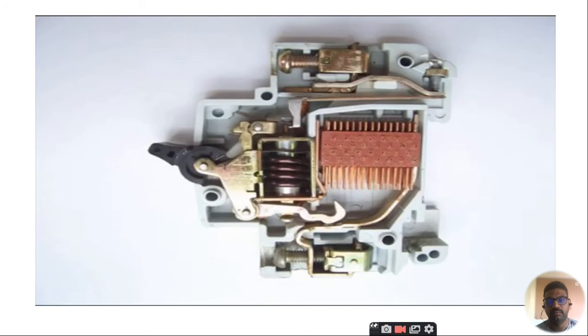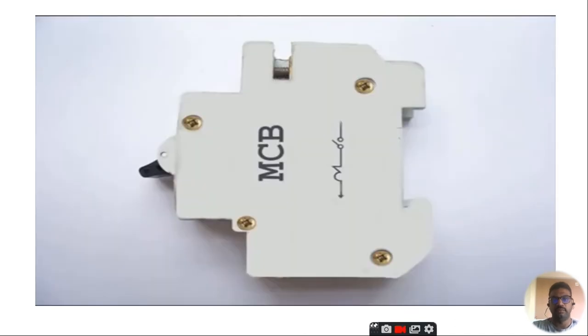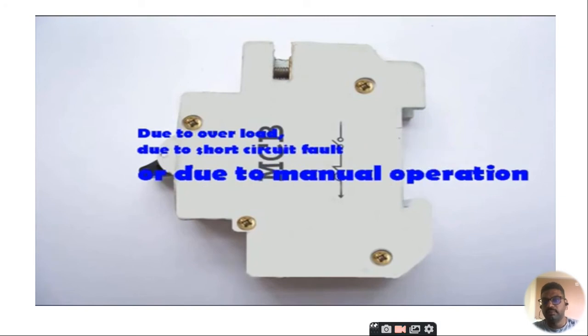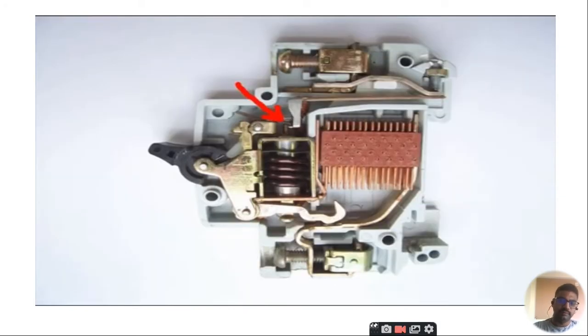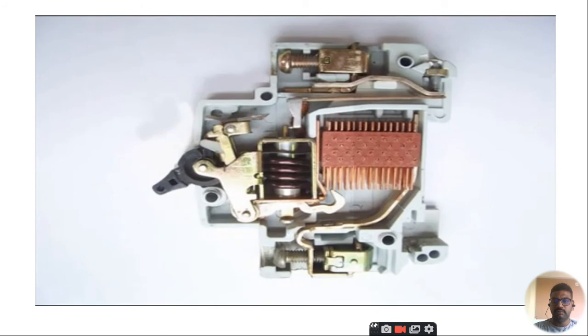When the MCB is required to be switched off manually, the operating lever is operated by hand. When we do so, the same latch point is displaced, and as a result, moving contact is separated from fixed contact and the MCB becomes off position. So whatever the operating mechanism - due to overload, short circuit fault, or manual operation - the same latch point is displaced and the spring is released, which is ultimately responsible for movement of the moving contact.